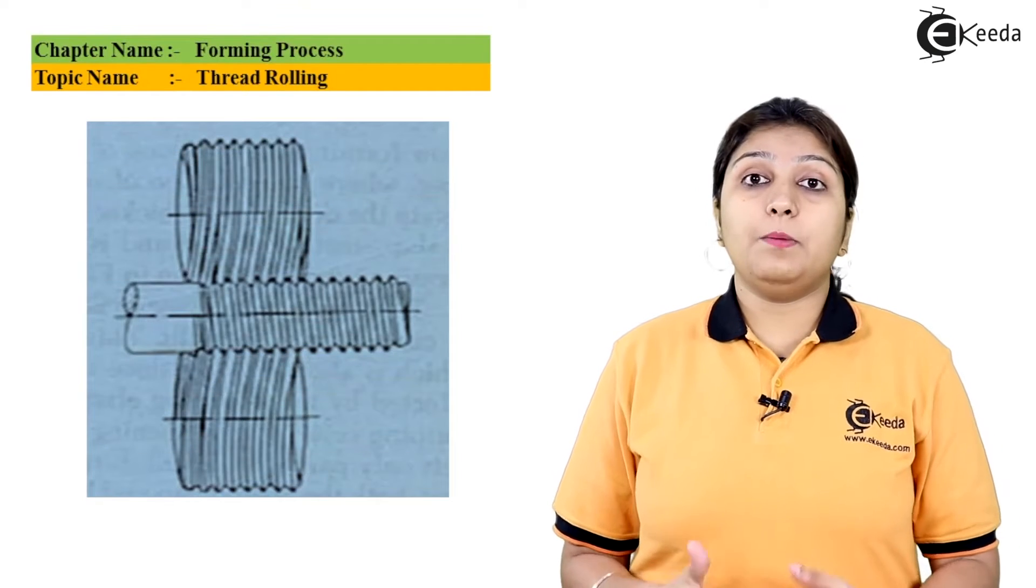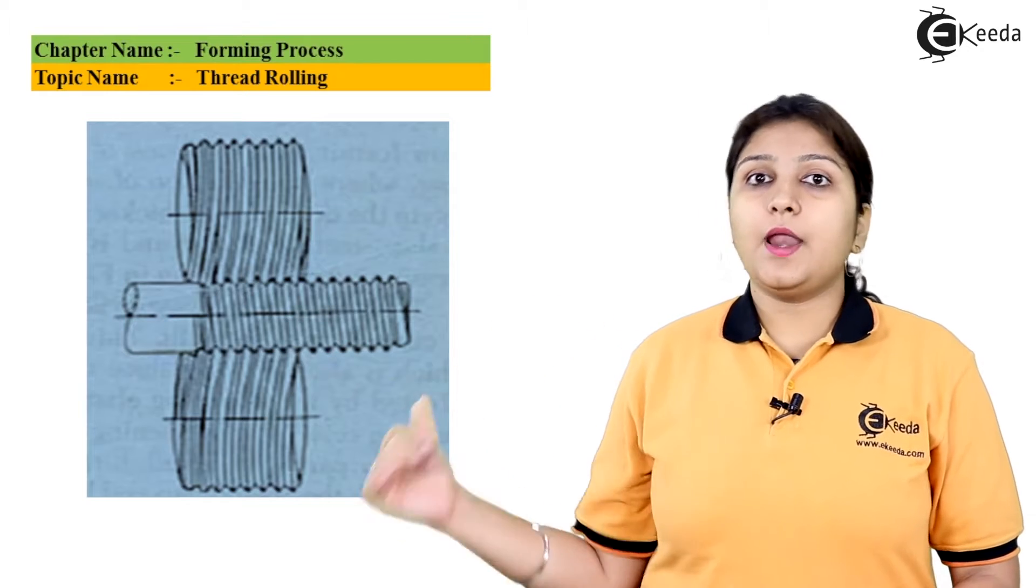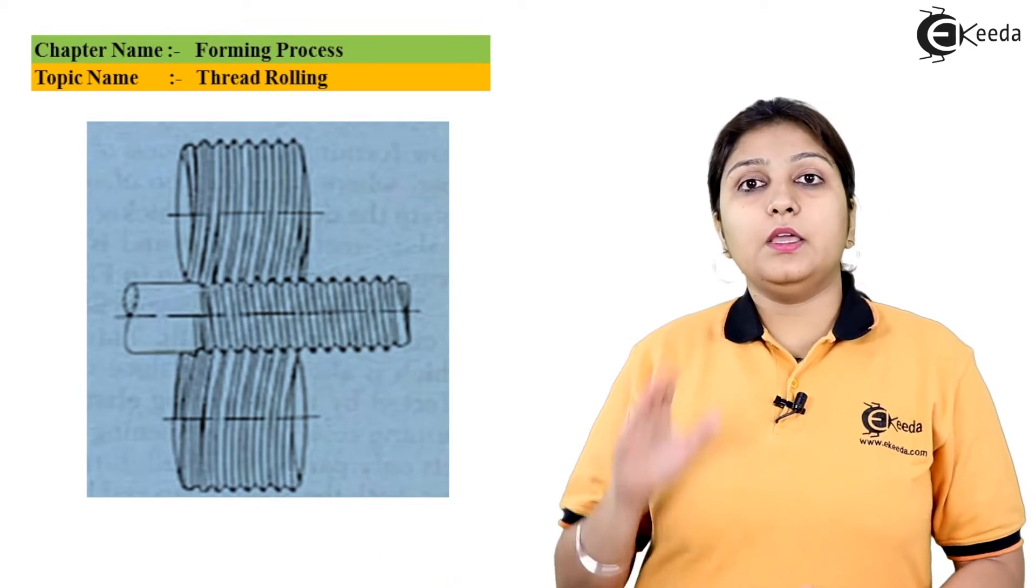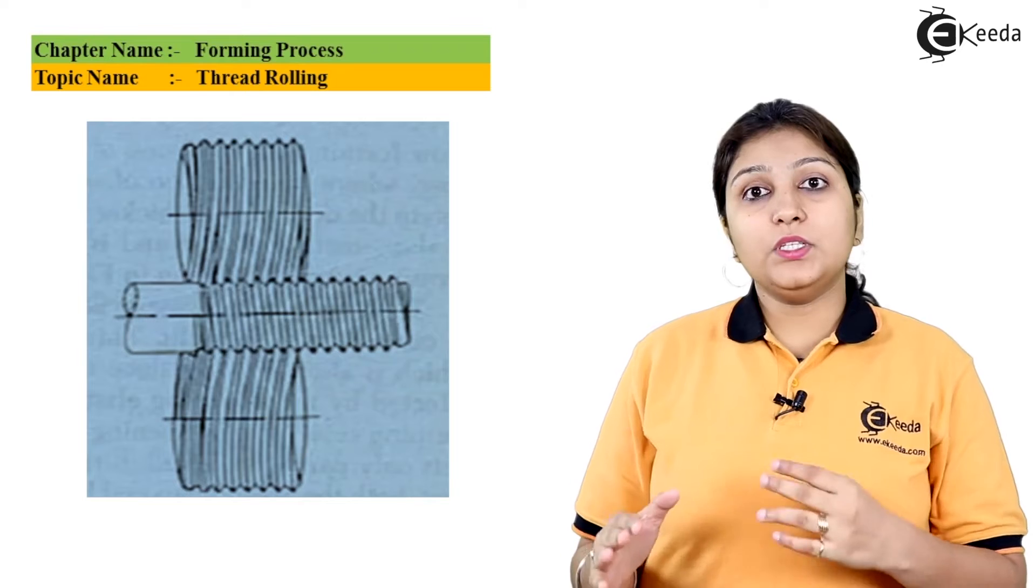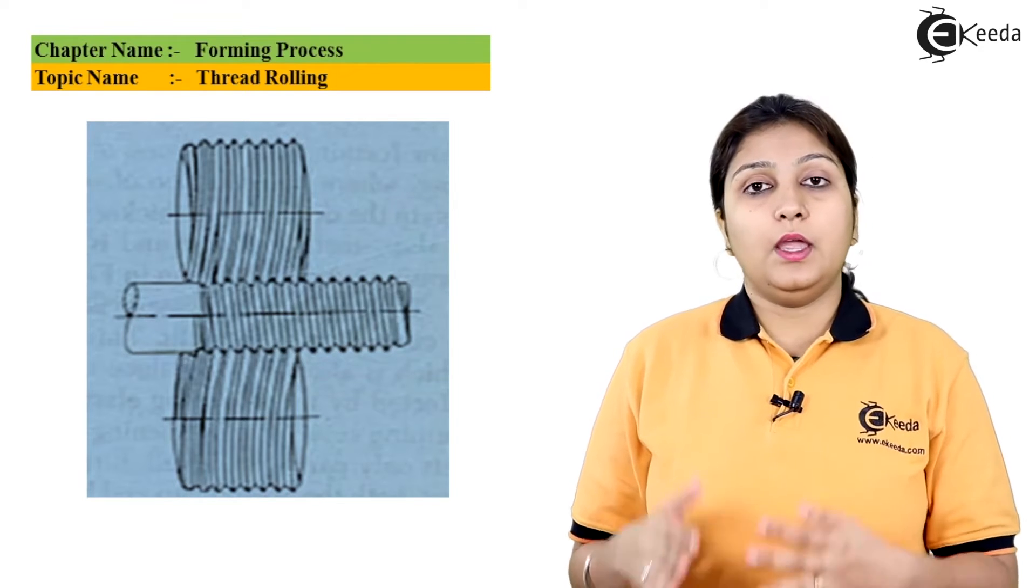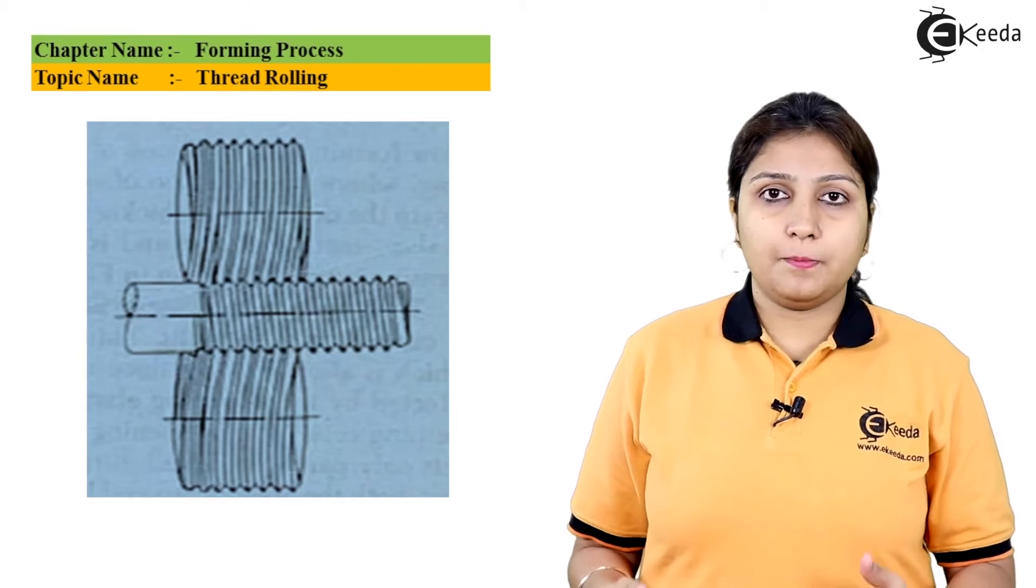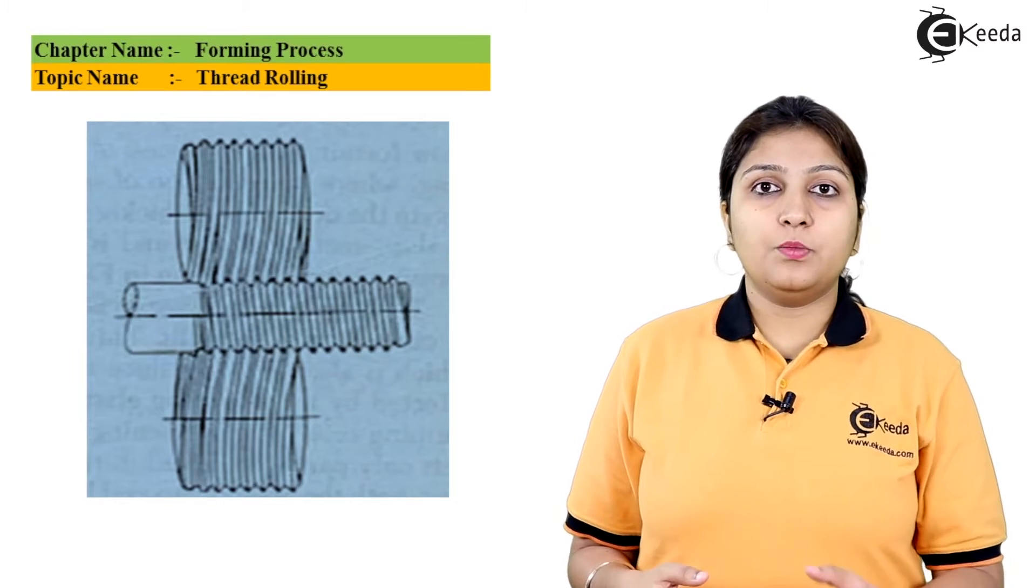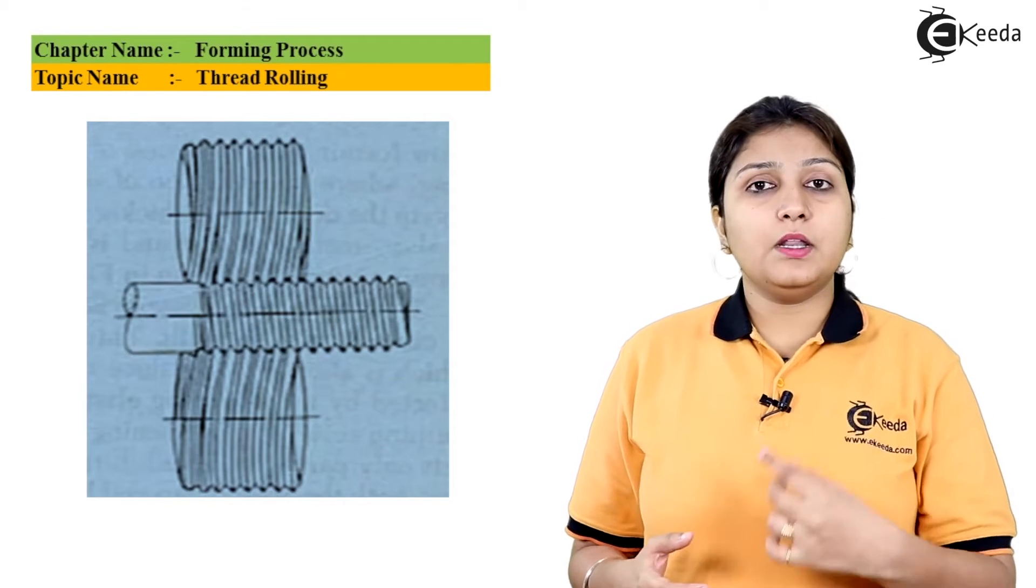So I will basically talk about thread rolling. In the diagram you can see that there is a die which has some crest as well as some root. It is nothing but threading. The material to be thread rolled is plain material.